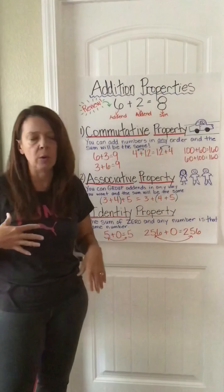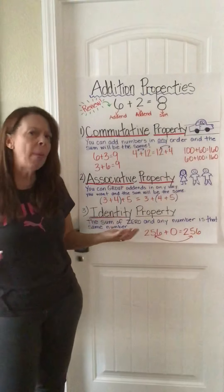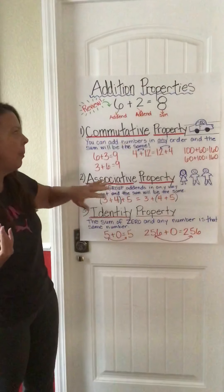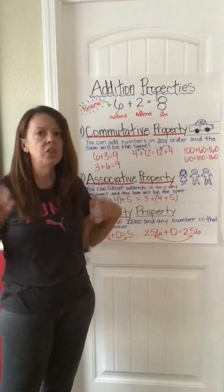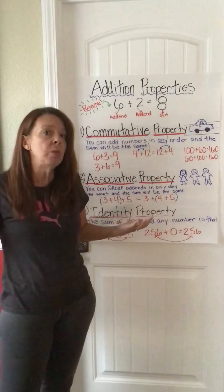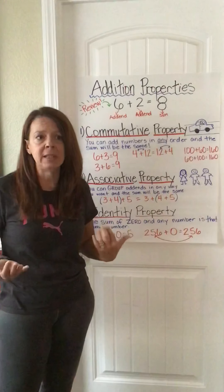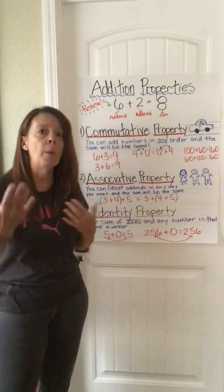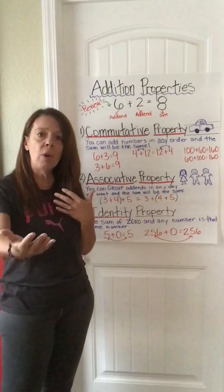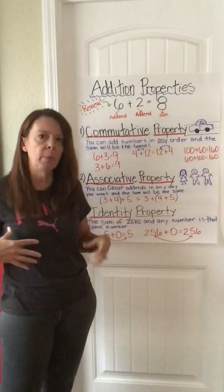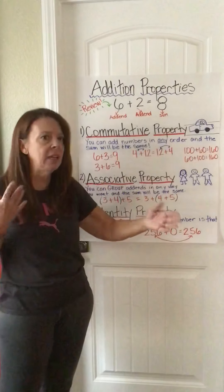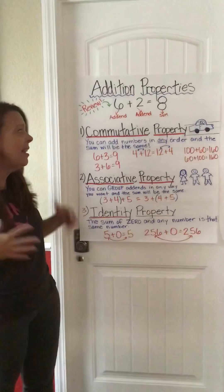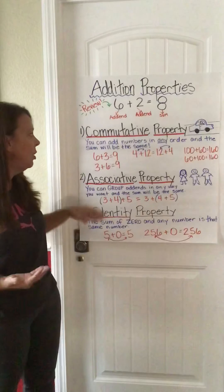The first addition property we're going to talk about today is the commutative property. Properties are just like rules for adding numbers. The word commute — you may have heard your parents say, I have to commute to San Diego for work — means to go back and forth. So commutative means to move around. The commutative property of addition says that you can add numbers in any order, and the sum will be the same.